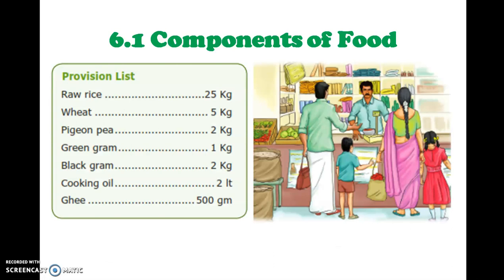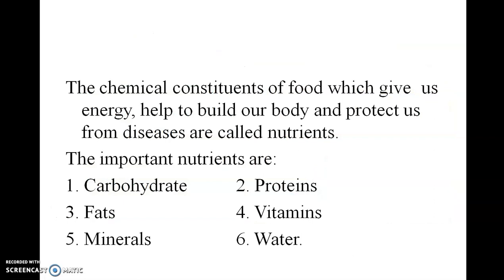Now let's look at the components of food. Suppose we go to a shop and buy materials like raw rice (25 kg), wheat (5 kg), green gram, cooking oil, and so on. The chemical contents in food material that give us energy, help build our body, and protect us from diseases are called nutrients. The most important nutrients are carbohydrates, proteins, fats, vitamins, minerals, and water.